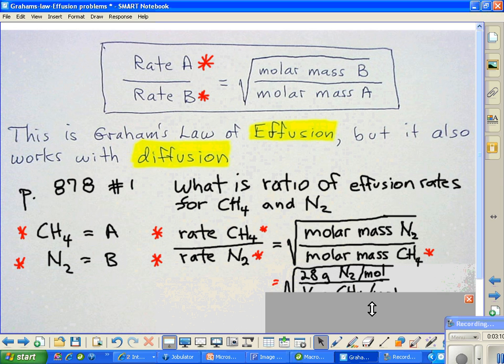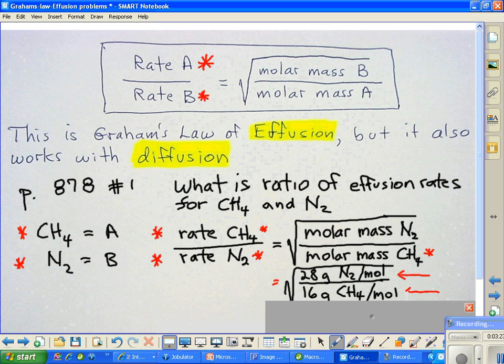Now, we can go to the periodic chart, and we can figure out the molar mass of two nitrogens, which is right in here. That's two nitrogens, 14 each. And for methane, the guy on the bottom, we have one carbon and four hydrogens. Carbon is 12, each hydrogen is 1. That adds up to 16.